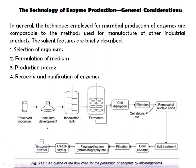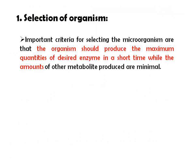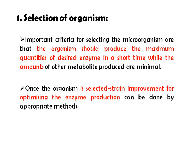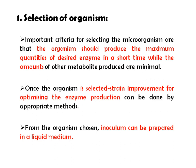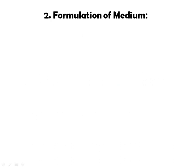This is the outline of enzyme production by microorganisms. The first step is the selection of microorganism. The important criteria for selecting a microorganism are that the organism should produce the maximum quantity of the desired enzyme in a short time, while the amount of other metabolites produced is minimal. Once an organism is selected, the strain is improved to optimize enzyme production by appropriate methods, and an inoculum can then be prepared in a liquid medium.